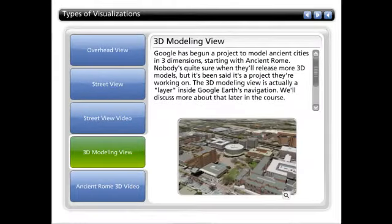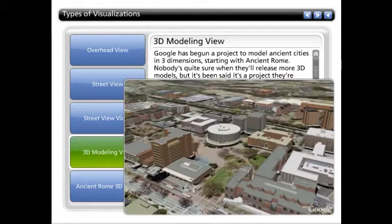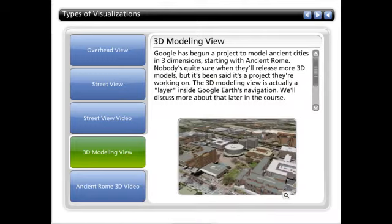Google has begun a project to model ancient cities in three dimensions, starting with ancient Rome. Nobody's quite sure when they'll release more 3D models, but it's been said it's a project they're working on. The 3D modeling view is actually a layer inside Google Earth's navigation — we'll discuss more about that later in the course.